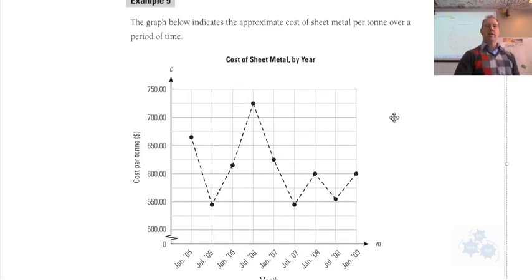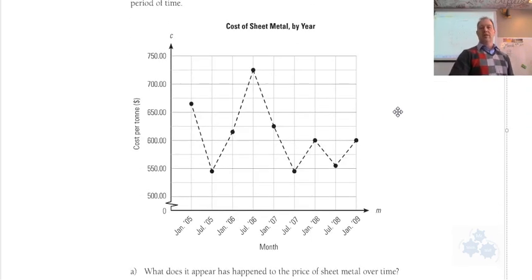So let's take a look at this example on page 72 in your notes. Look at this graph showing the cost of sheet metal by year. We see the month of the year in January and July of 05, 06, 07, 08, and January of 09. So it's over a period of about four and a half years. When you see this graph, what's your reaction? What do you think?